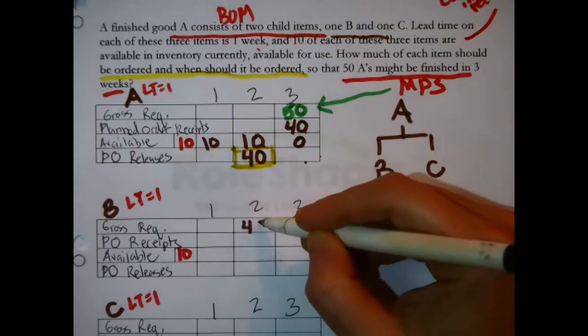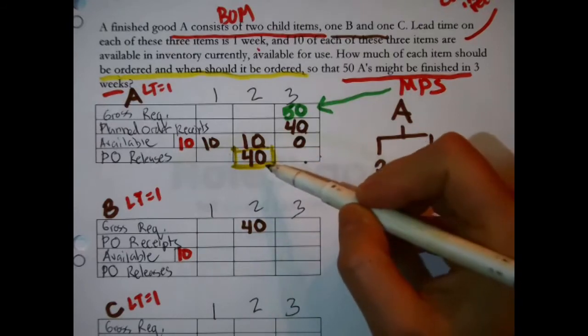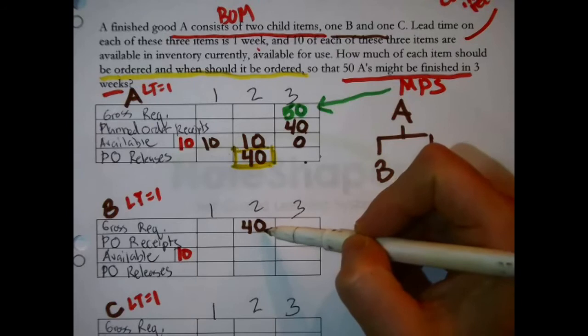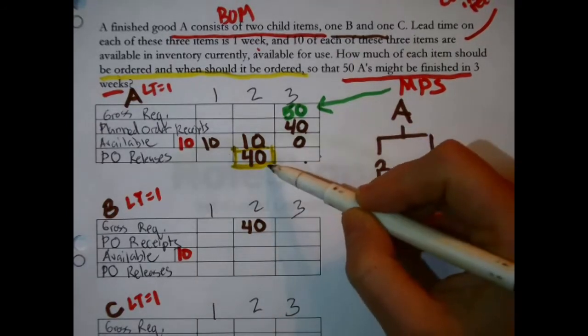This just appears to be one to one, so we can just take this forty and pass it right straight down to the top line of B's record. When we request forty A be produced, forty B need to be ready to be consumed, right, because they go into it.